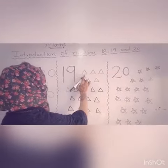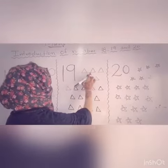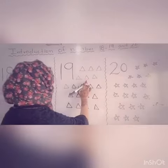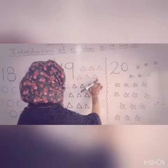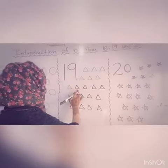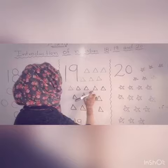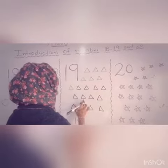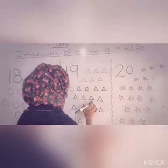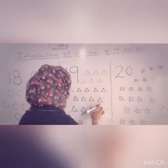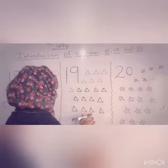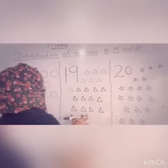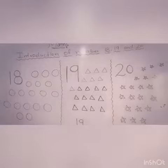Count it. 1, 2, 3, 4, 5, 6, 7, 8, 9, 10, 11, 12, 13, 14, 15, 16, 17, 18, 19. There are 19 triangles.